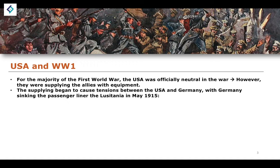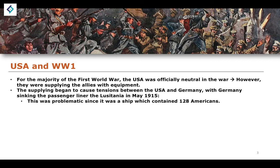The supplying began to cause tensions between the USA and Germany. And in May 1915, the German Navy sank the passenger liner the Lusitania, which contained a number of US nationals — 128 specifically.